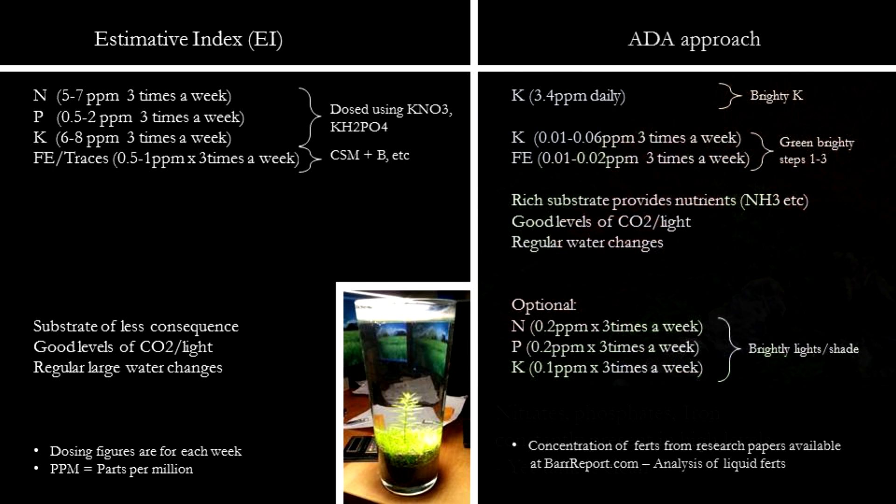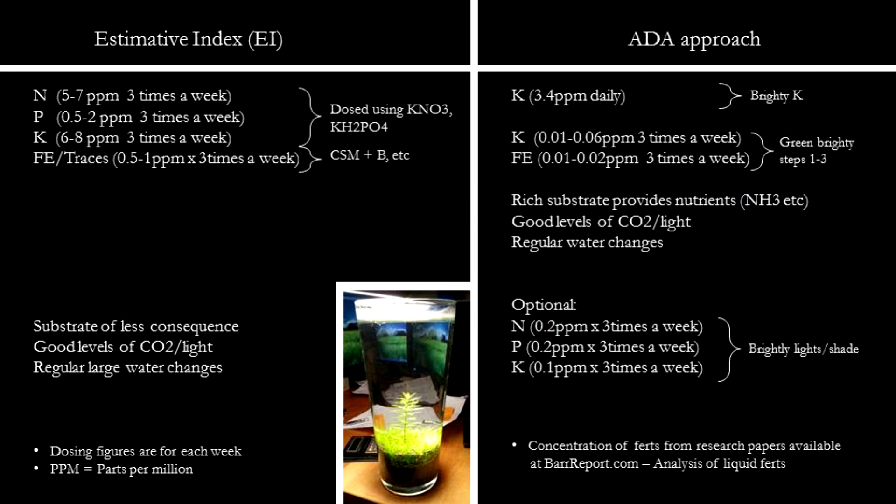The next system we are examining is the ADA approach. At the heart of ADA's system is its very rich substrate, which provides a very high amount of ammonia as well as nitrates, giving a non-limiting source of nitrogen for plants. In the ADA system, a high level of potassium is dosed on a daily basis, and iron is also dosed regularly three times a week. However, compared to the levels recommended by EI, these are much lower. The ADA dosing regime is much lighter compared to EI, especially so for phosphates, which ADA liquids are very light in.